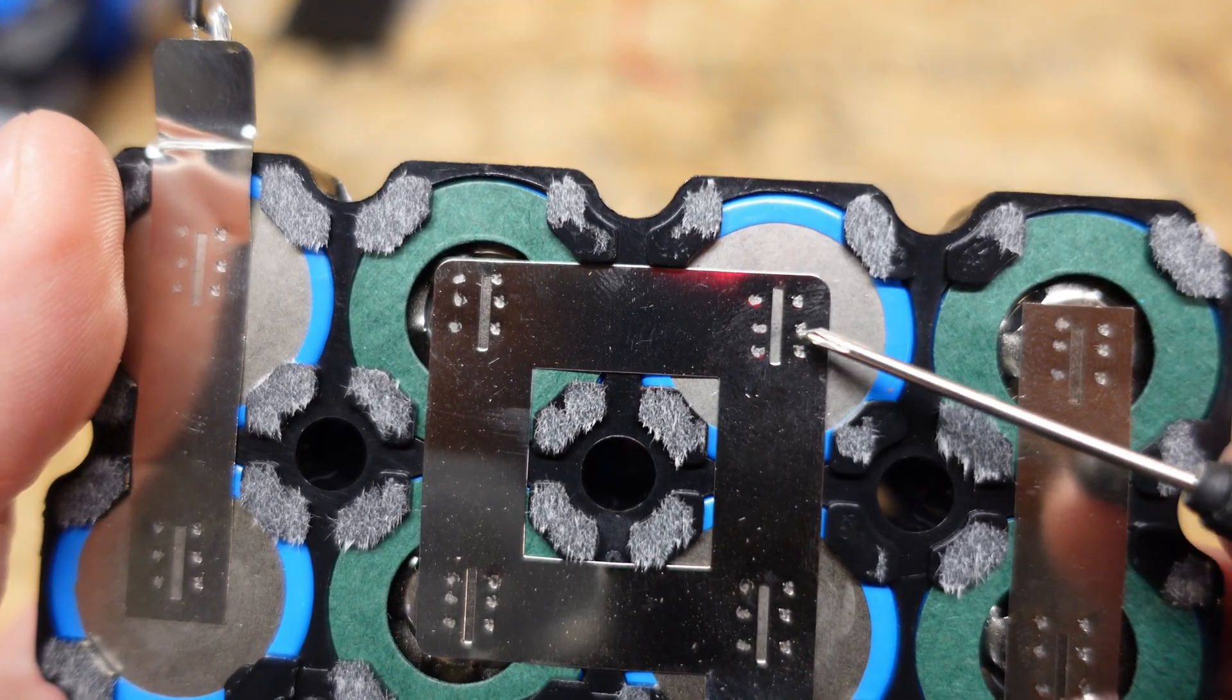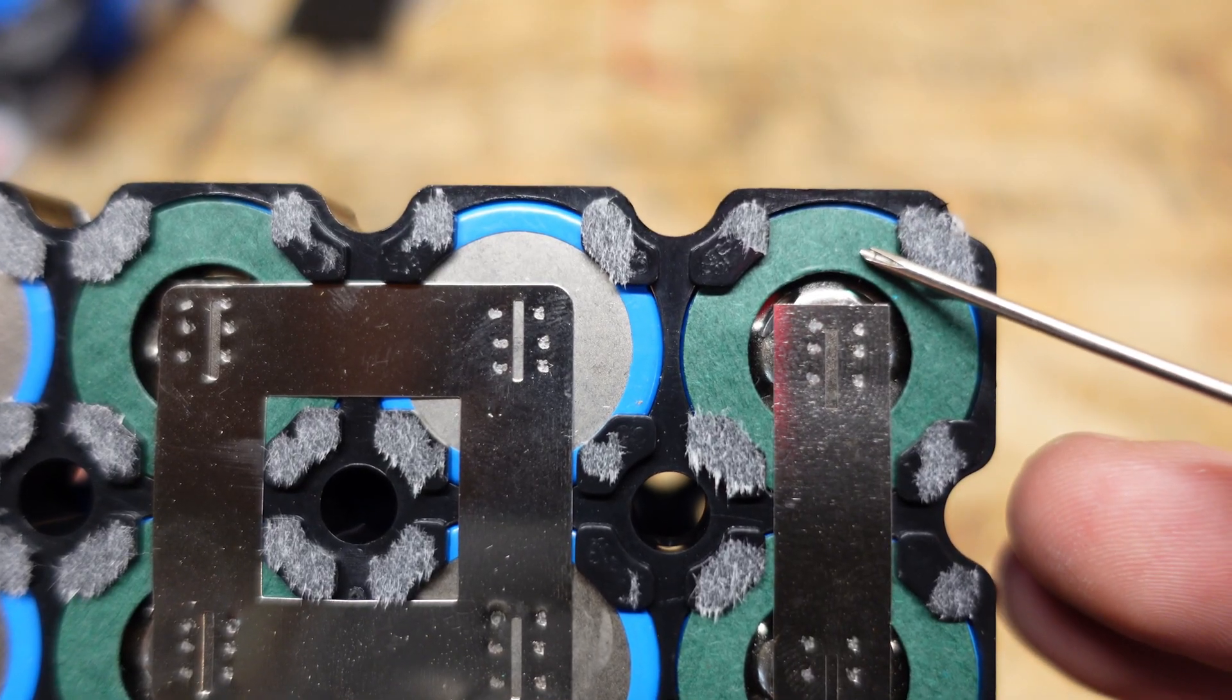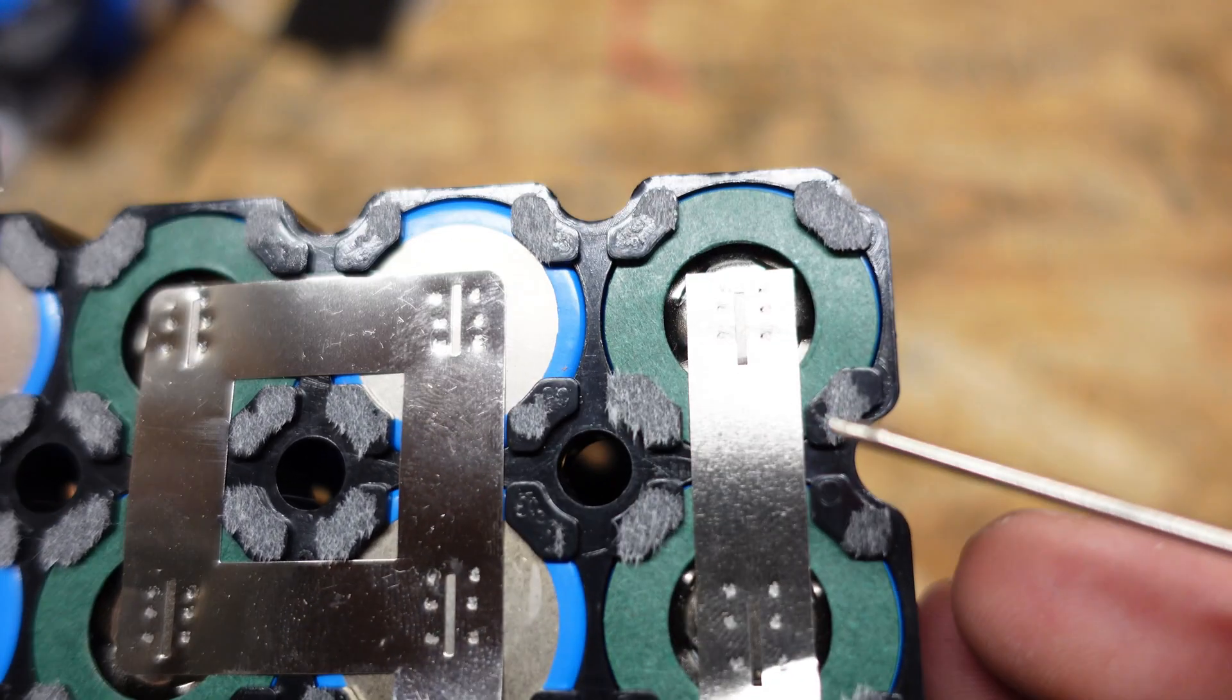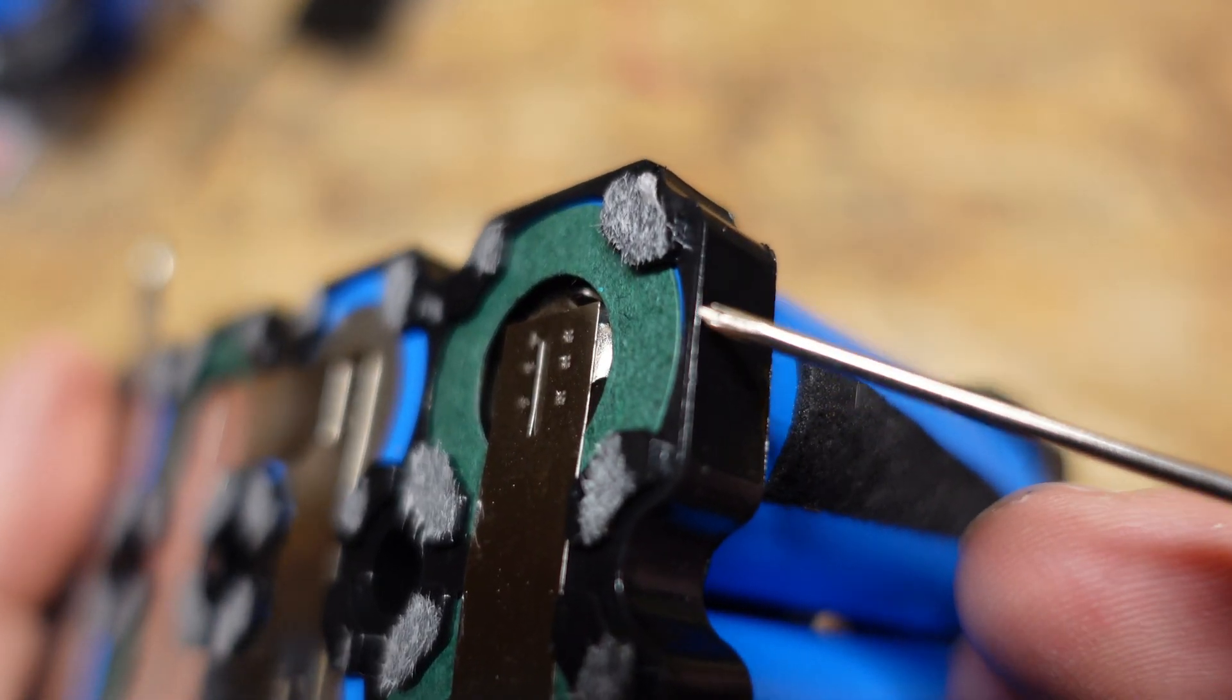And that just helps create a better weld the way the current flows during the welding process. Additionally they did use insulative adhesive rings on the positive side here which provides an extra level of protection from this nickel strip resting against the top of the cell.